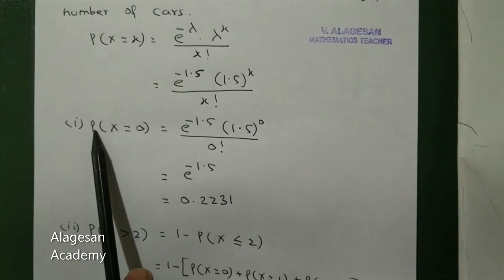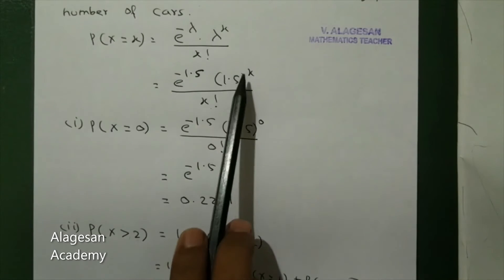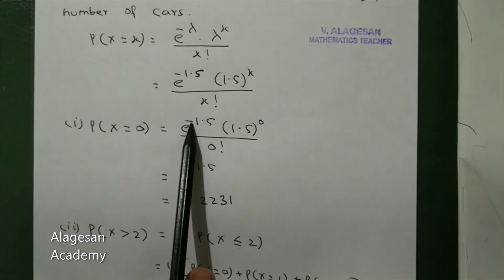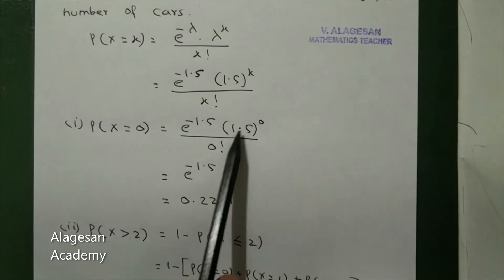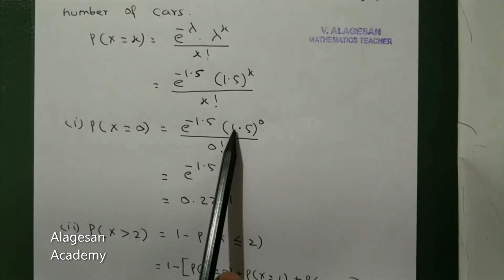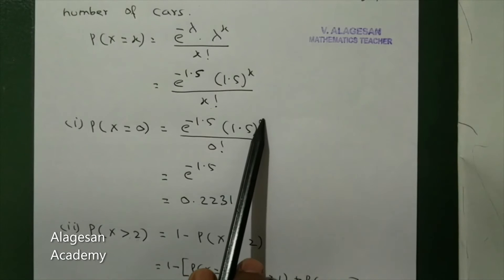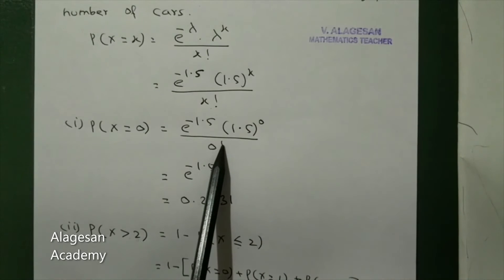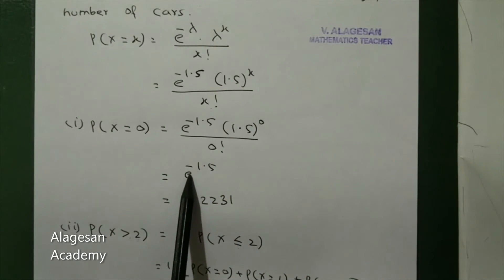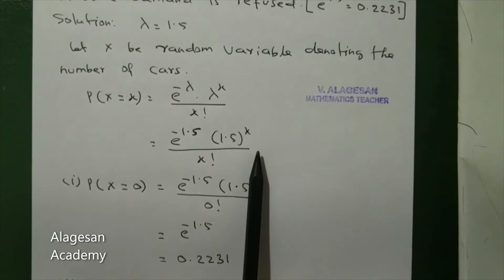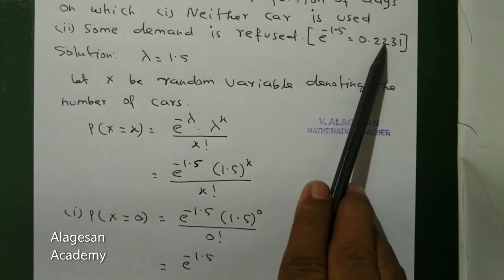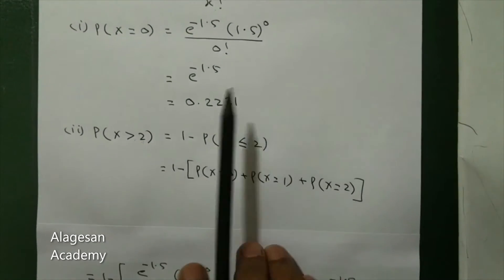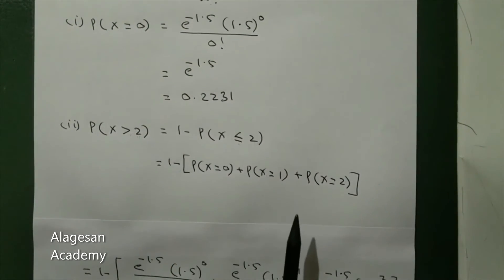First question: P of X equal to 0. Substituting X equal to 0, we get e power minus 1.5 into 1.5 power 0 by 0 factorial. Anything to the power 0 is 1, and 0 factorial is also 1. So we get e power minus 1.5, which equals 0.2231.